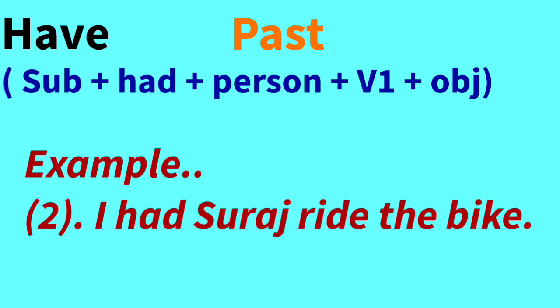The second past example is: 'I had Suraj ride the bike.' Nothing changes in the structure — 'had' is used because it is past tense. The meaning is: I got the bike ridden by Suraj. The work of riding the bike was assigned to Suraj, so Suraj is the doer.